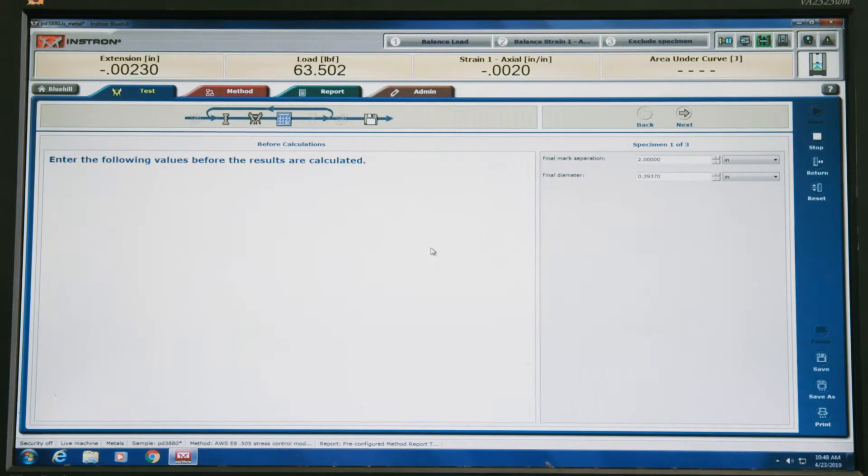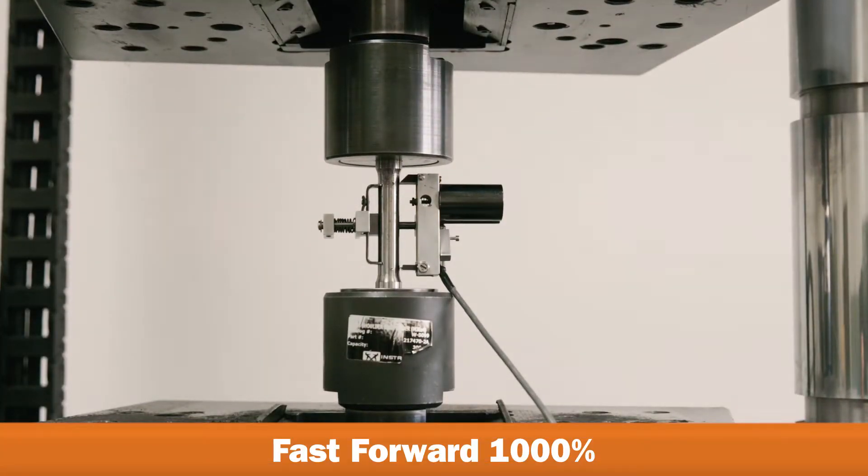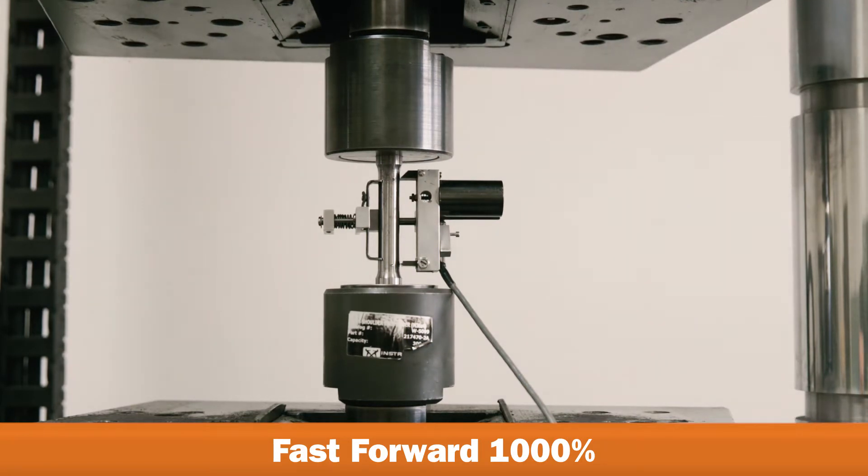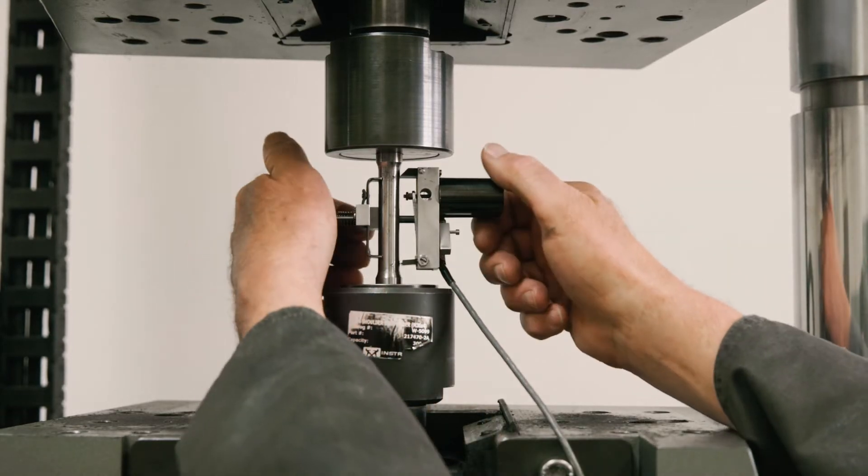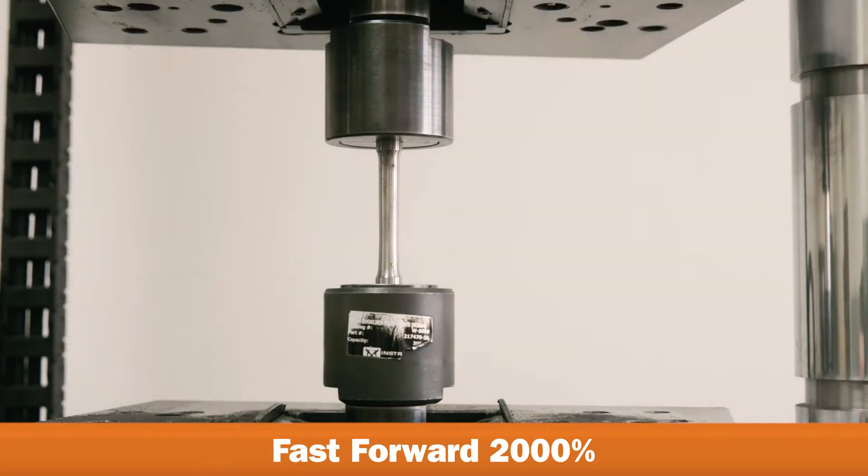The technician then initiates the test. The crossheads begin pulling in opposite directions. Until the yield point has been reached, there is no plastic deformation of the sample. Once the material has reached its yield point, the extensometer is removed. The test then resumes until the material fails.